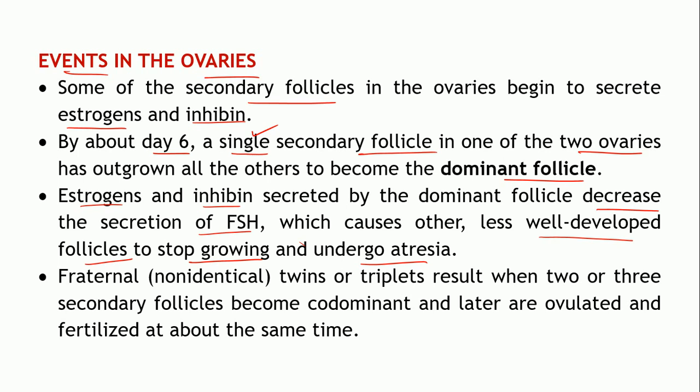Sometimes more than one secondary follicle may become co-dominant. In that case, fraternal twins — or non-identical twins — will be formed. Fraternal twins do not look alike because two or more secondary follicles become dominant, rupture, and release secondary oocytes that may be fertilized simultaneously. If three follicles become co-dominant, triplets may also be born.